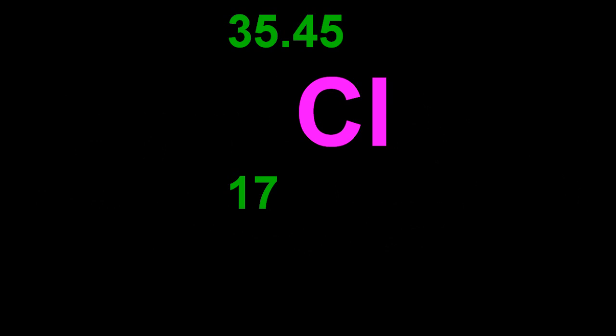The top number, the big number, is the mass number. Now it might not always be on the top, but the bigger number is always the mass number, and that's the number of protons and neutrons. So how come that isn't an integer? Well, on the periodic table, it's a weighted average.